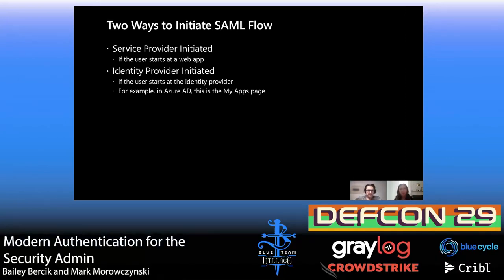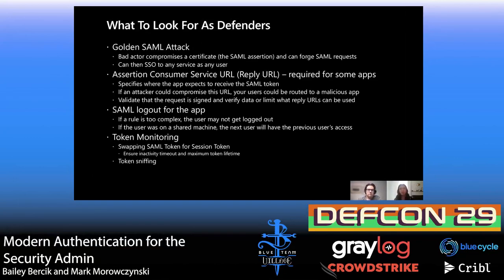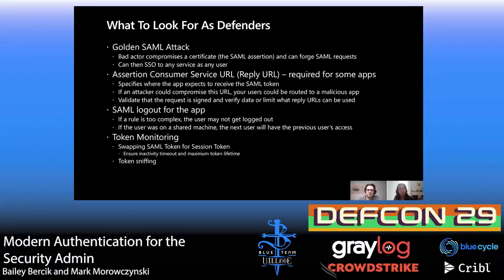You may also hear about identity provider-initiated SAML flows—for example, starting from the Azure AD My Apps page or an Okta end-user dashboard—it just begins at a different point in the flow. As a defender, the biggest concern is golden SAML attacks. Since SolarGate happened, this has been much more top of mind. A bad actor who compromises the SAML assertion can forge SAML requests and SSO into any service as any user, which is particularly scary.